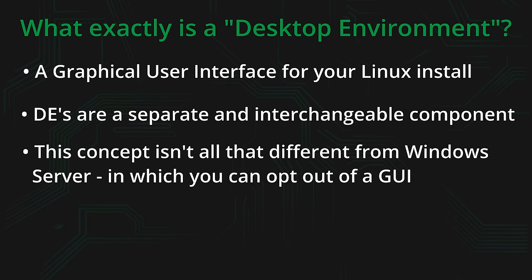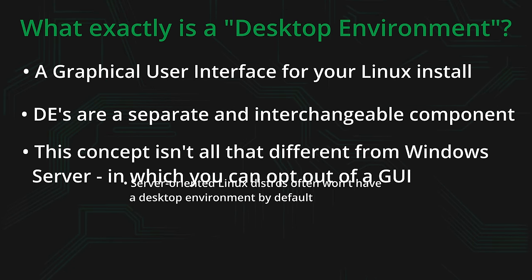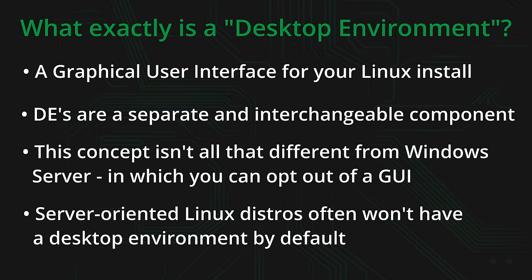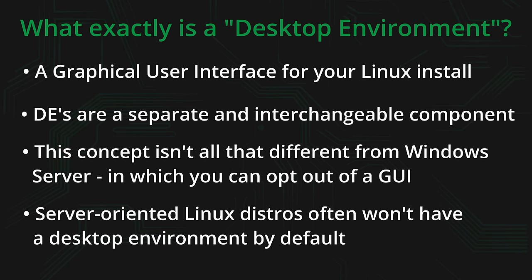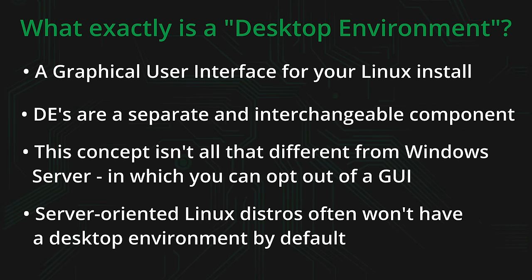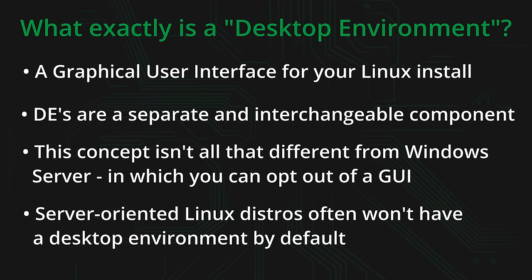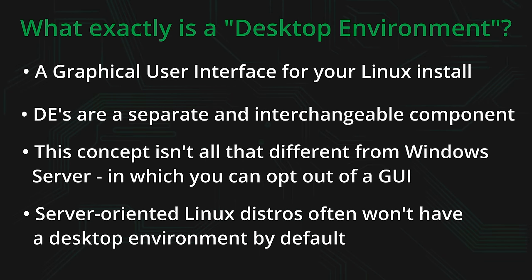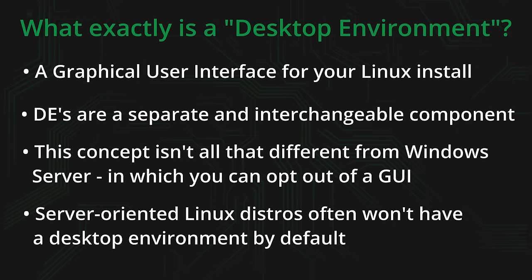Linux distributions often include a GUI — a desktop environment — especially the ones geared more towards desktop and laptop use. But server distributions, things like CentOS and others, will often not have a desktop environment at all, meaning when you install them you'll have just the command line. Ubuntu Server is a great example: it doesn't come with a GUI, though you can install one. But if you're going to do that, you may as well install regular Ubuntu, which includes the GNOME desktop by default.